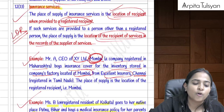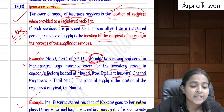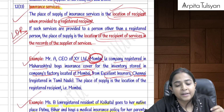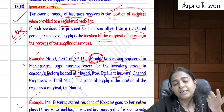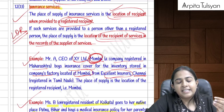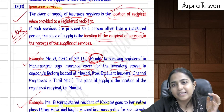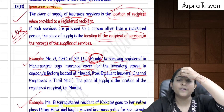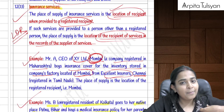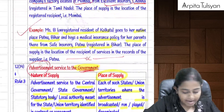Section 12(13) covers insurance services. Since the insurance company always has the policyholder's address, the place of supply is the location of the recipient. For registered persons, this is the GSTIN address. For unregistered persons, it is the recipient's address as available with the supplier.